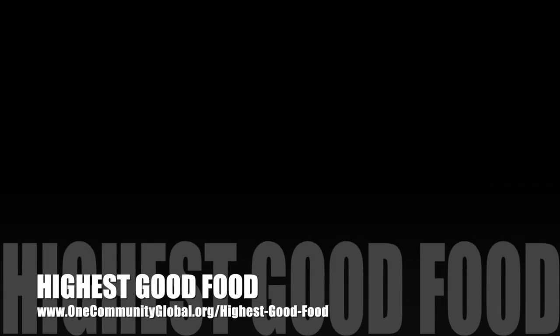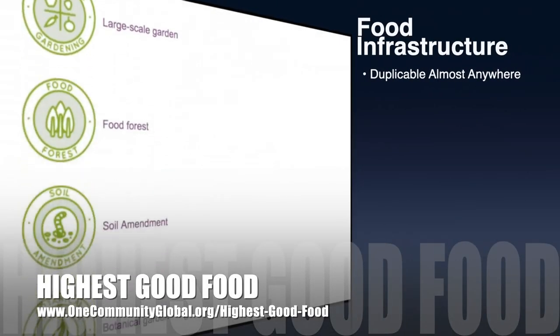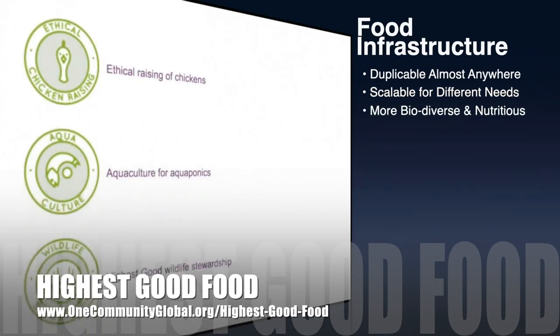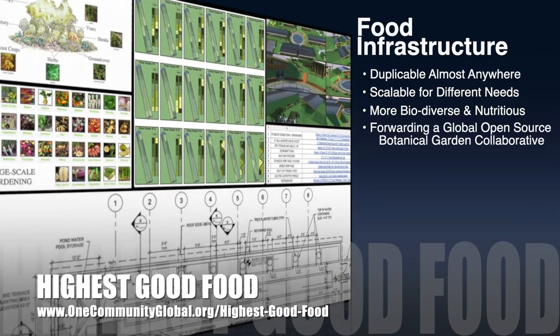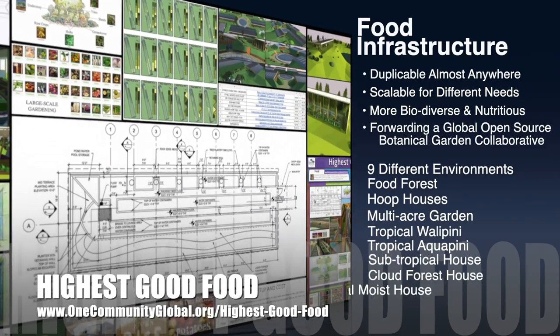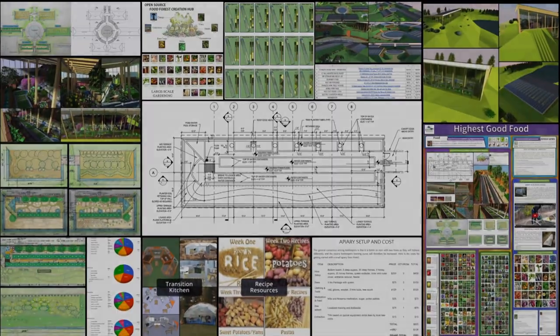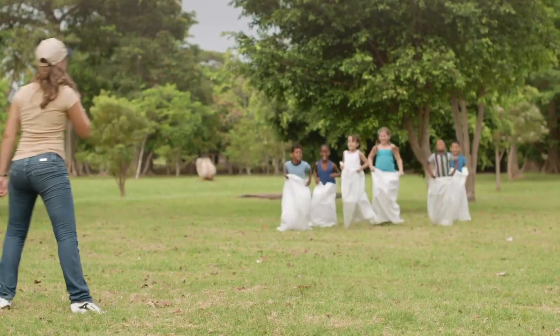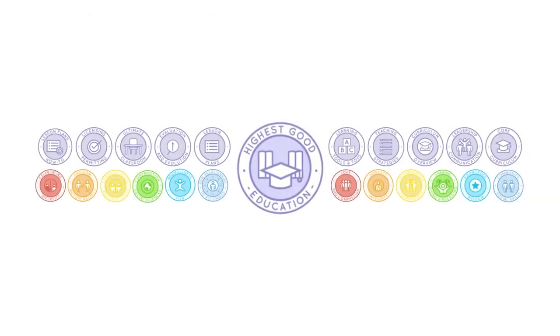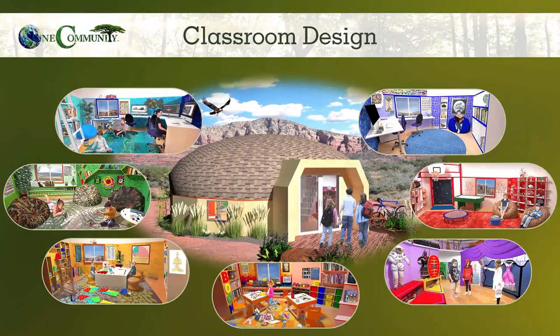One Community's approach to highest-good food is duplicable almost anywhere, scalable for different needs, more biodiverse and nutritious, part of forwarding a global open-source botanical garden collaborative, and includes nine different free-shared and duplicable growing environments. The next component is highest-good education — this component is complete and pretty much ready to launch once we're on the property. One Community's approach to highest-good education is designed for all age groups, adaptable to any schooling environment, inspiring and fun for all participants, and includes national standards, all subjects, lesson plans, teaching strategies, learning strategies and tools, and classroom design.